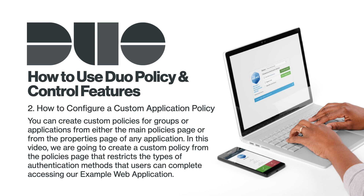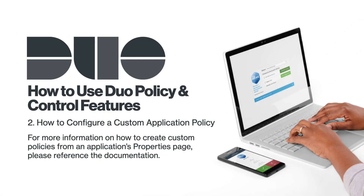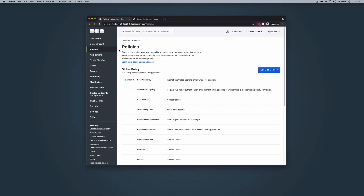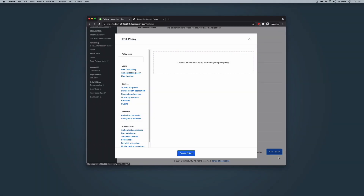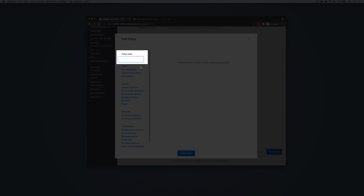In this video, we are going to create a custom policy from the policies page that restricts the types of authentication methods that users can complete when accessing our example web application. For more information on how to create custom policies from an application's properties page, please reference the documentation. From the main policies page in the admin panel, scroll down to the custom policies section. Click New Policy. In the policy editor's left sidebar, enter a name for the policy. We'll title our policy Duo Push Only.